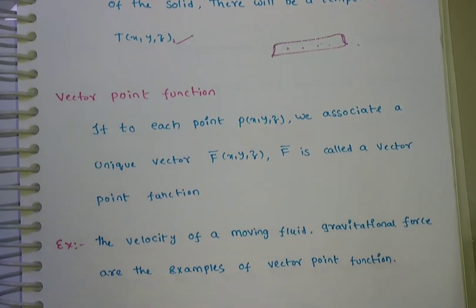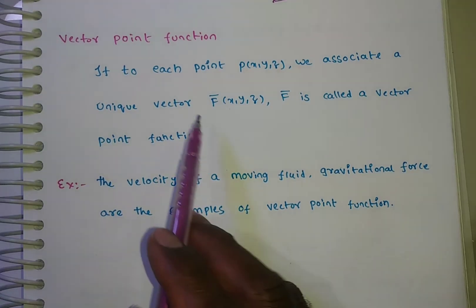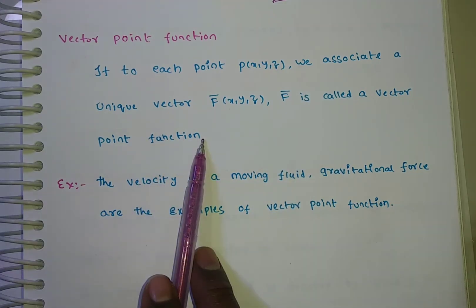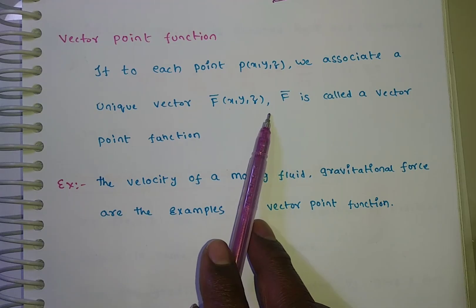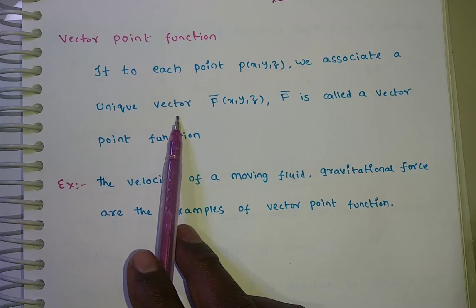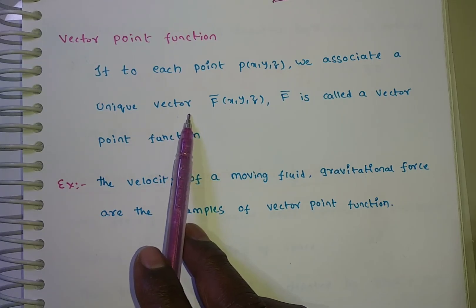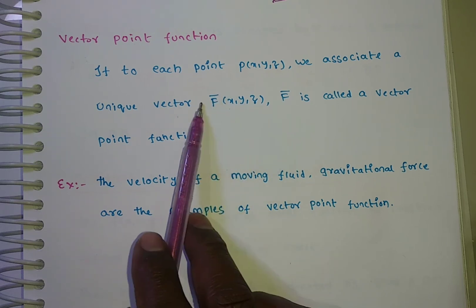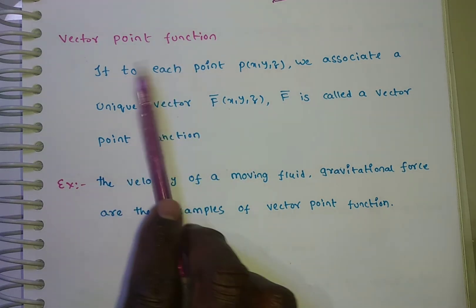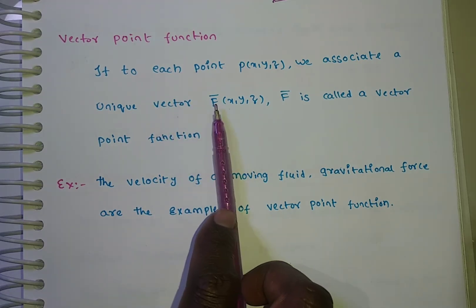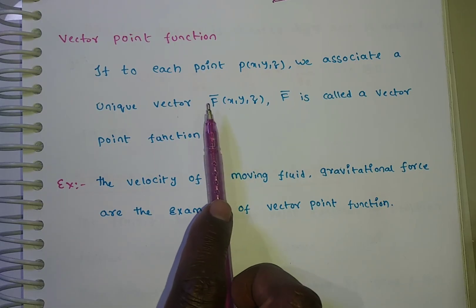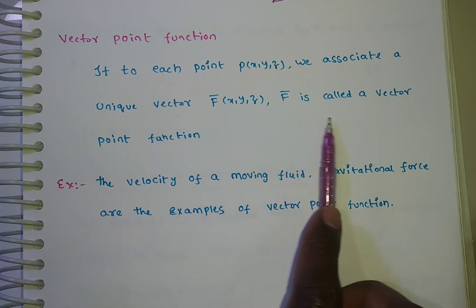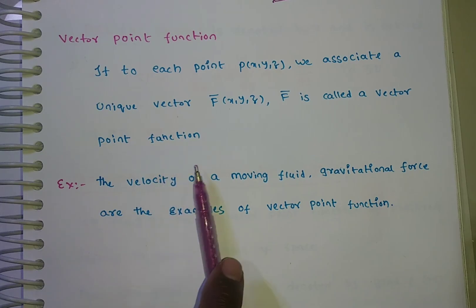Now coming to the vector point function. If to each point P of x, y, z we associate a unique vector f-bar of x, y, z — here, unique real number means phi of x, y, z, whereas unique vector means f-bar of x, y, z. If there is no bar it is called a scalar point function; if bar is there, we are denoting it as a vector. So f-bar of x, y, z is called a vector point function.